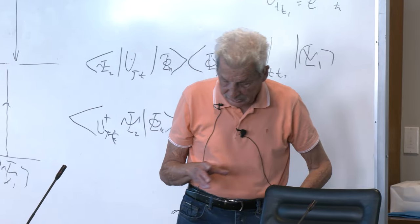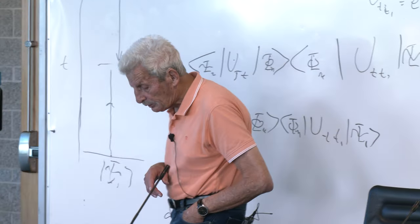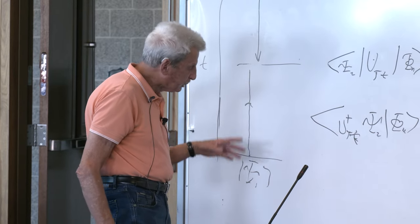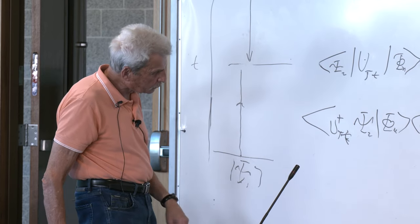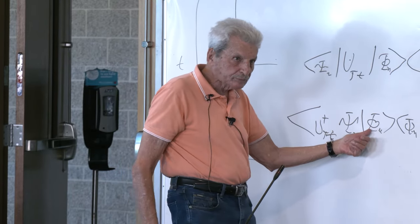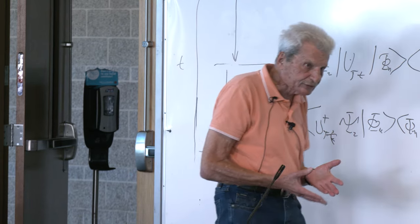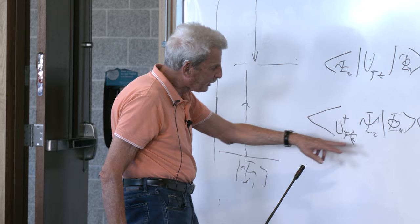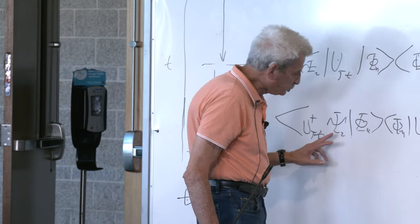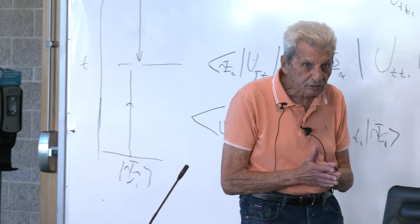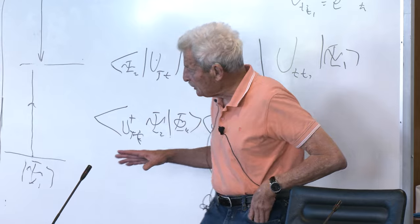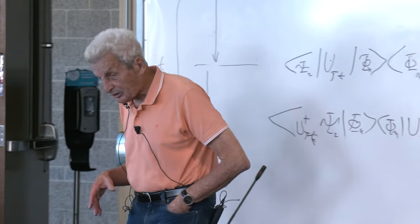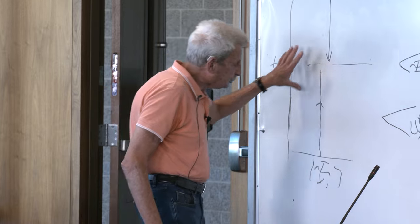Another nice thing about the two-vector formulation is that it is infinitely simpler mathematically. In the usual calculation, for each different outcome in the middle, you have to solve another differential equation. Here, once and for all, you do the solution from ψ₁ to ψ₂, and the rest is just scalar products, which is much, much simpler. So this formulation is both mathematically simpler and time-reversal symmetric.